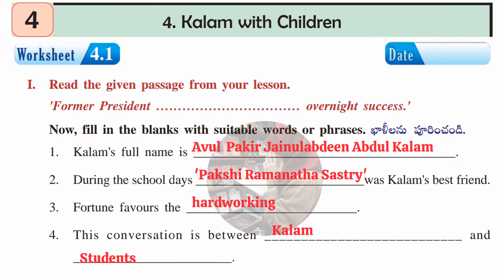This is worksheet 4.1. In the first section we have a passage 'From Former President to Overnight Success.' We have fill-in-the-blanks. First: Kalam's full name is Avul Pakir Jainulabdeen Abdul Kalam. Second: during school days, Pakshi Ramanath Sastri was Kalam's best friend. Third: fortune favors the hard working. Fourth: this conversation is between Kalam and students.